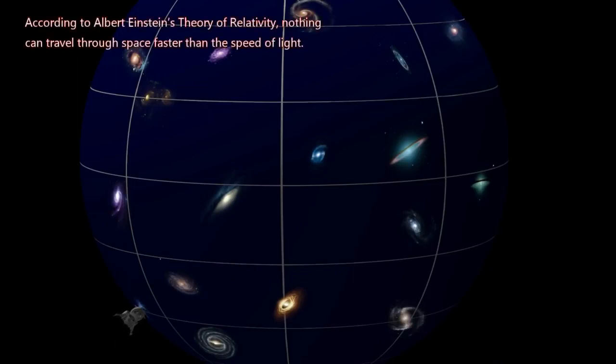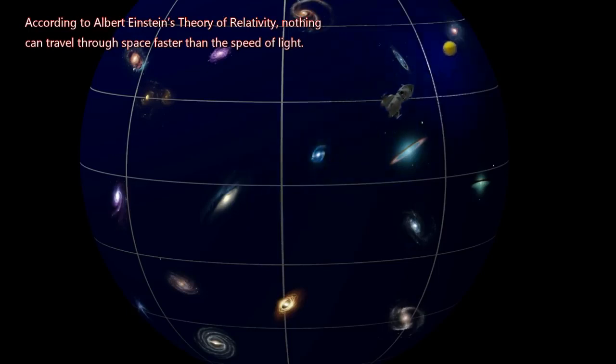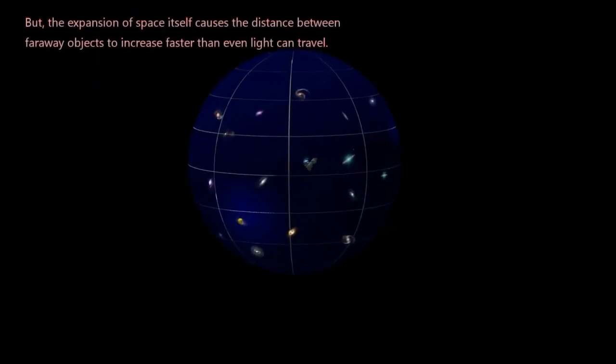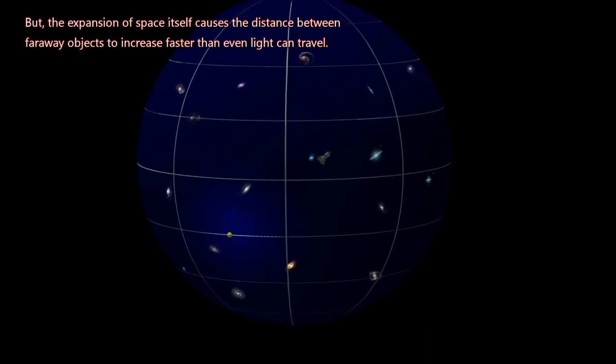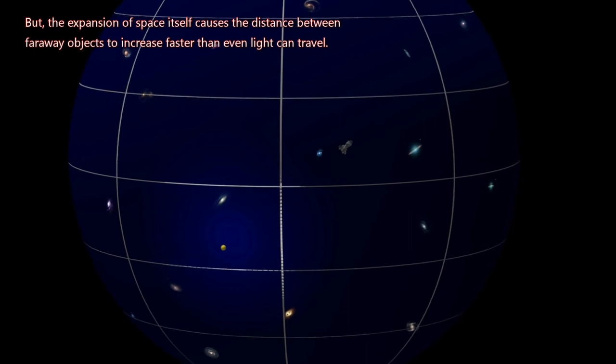According to Albert Einstein's theory of relativity, nothing can travel through space faster than the speed of light. But the expansion of space itself causes the distance between far away objects to increase faster than even light can travel.